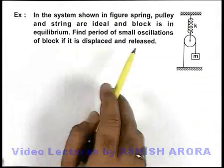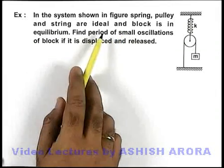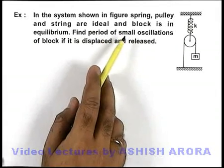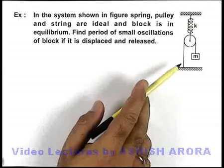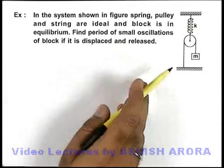In this example, we are given that a system shown in figure - spring, pulley, and strings are ideal, and block is in equilibrium. We are required to find small oscillations of block if it is displaced and released.